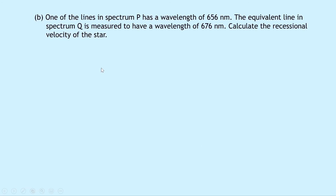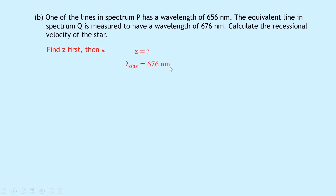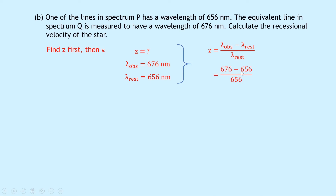Part B says that one of the lines in spectrum P has a wavelength of 656 nanometers. The equivalent line in spectrum Q is measured to have a wavelength of 676 nanometers. Calculate the recessional velocity of the star. We first need to find z. Lambda OBS is 676 nanometers and lambda rest is 656 nanometers. Using z equals lambda OBS minus lambda rest over lambda rest: 676 minus 656 divided by 656 gives z equals 0.03.